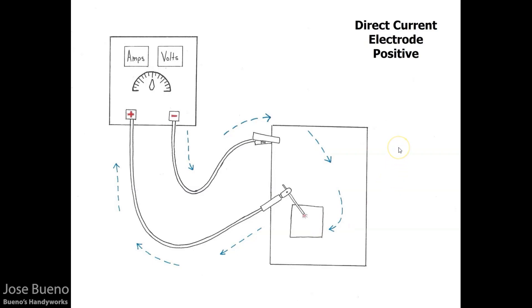Another name for direct current electrode positive is direct current reverse polarity. This is a term that not too many people use anymore, but it is still out there and you should be familiar with it. The current term for this polarity is direct current electrode positive.